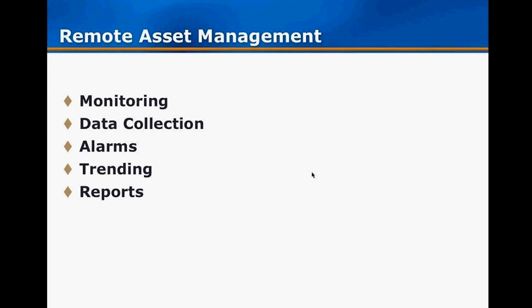For remote asset management, Five Star focuses on monitoring, data collection, alarms, trending, and reports. They monitor primarily flow, and batteries — if a battery drops below 10.5 volts on many meters, it will stop measuring gas or radios will quit talking, so they can detect when batteries need replacing. They look for no-flow conditions with volume alarms so a field engineer can be alerted to give that well attention. Trending helps with batteries too — you can see the trend of battery voltage dropping or recovering with solar charging, and determine if you can get a few more days out of it.